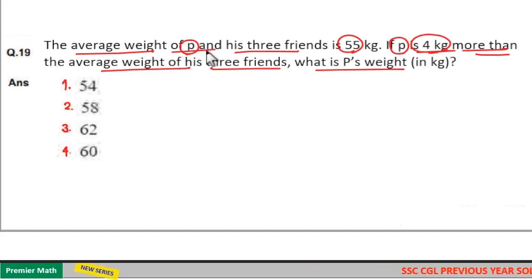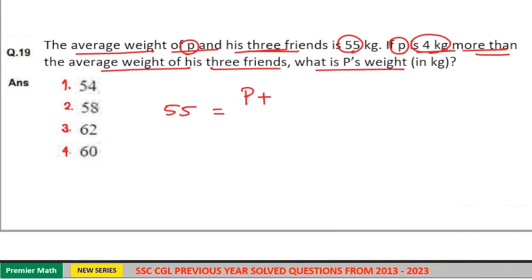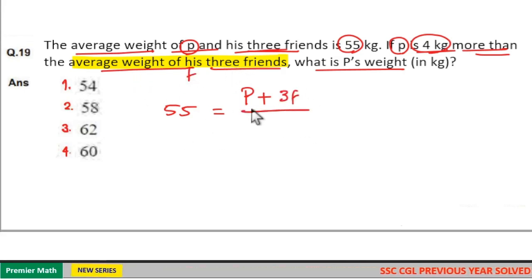Here, average weight of P and his 3 friends is 55 means 55 is equal to weight of P plus weight of his 3 friends. Consider average weight of his 3 friends as F. Then weight of his 3 friends will become 3 into F, 3F divided by total 4 people.